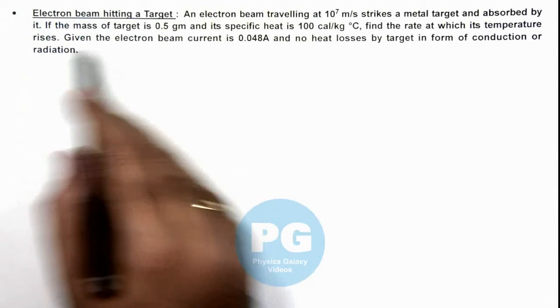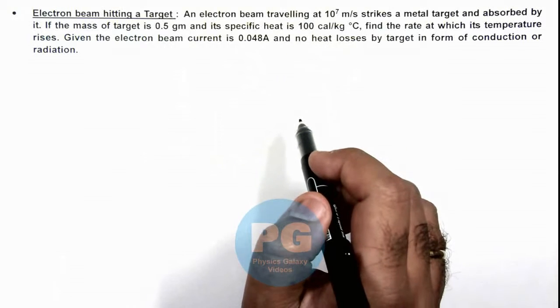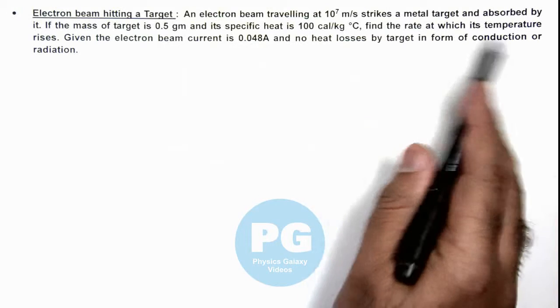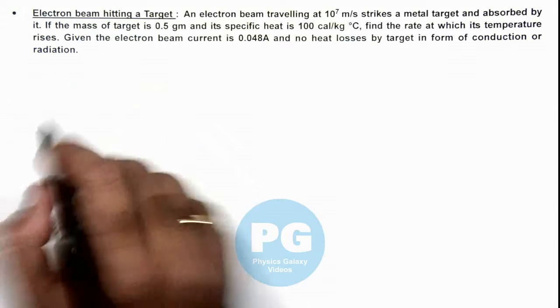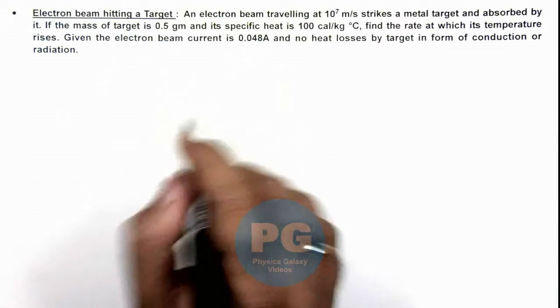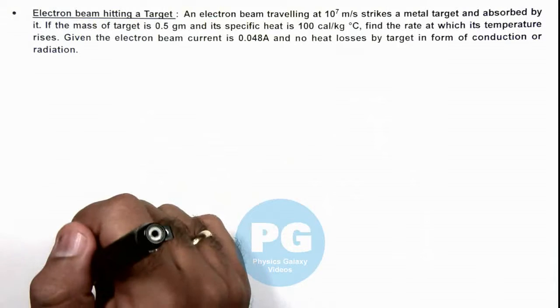If the mass of target is 0.5 gram and its specific heat is 100 calories per kilogram degree centigrade, we are required to find the rate at which its temperature rises. The electron beam current is 0.048 ampere and it is not losing any heat in form of conduction or radiation.